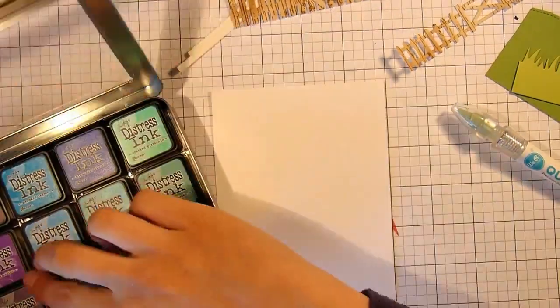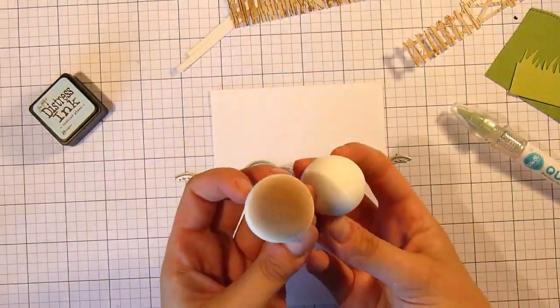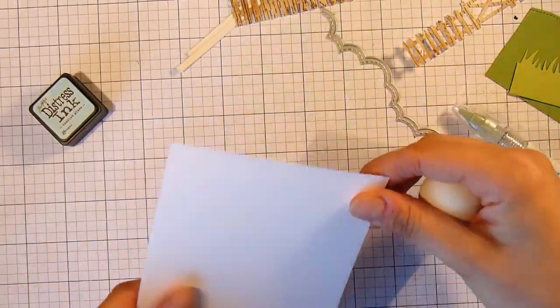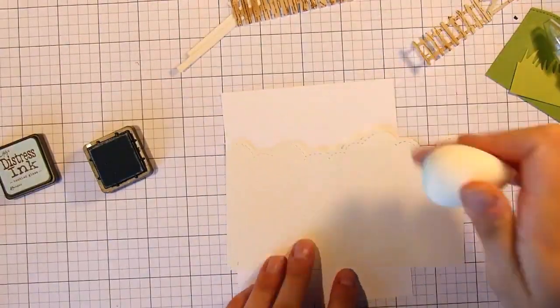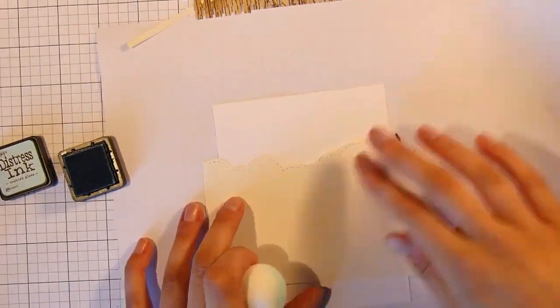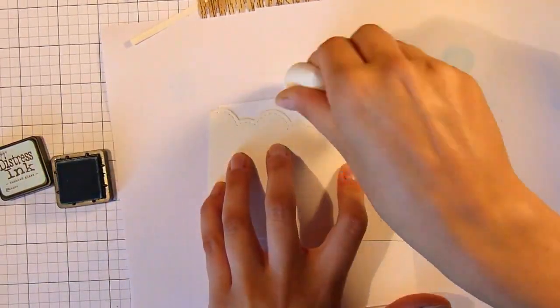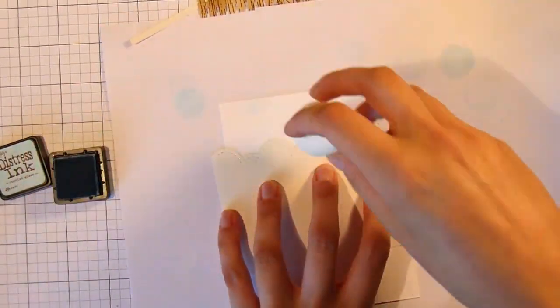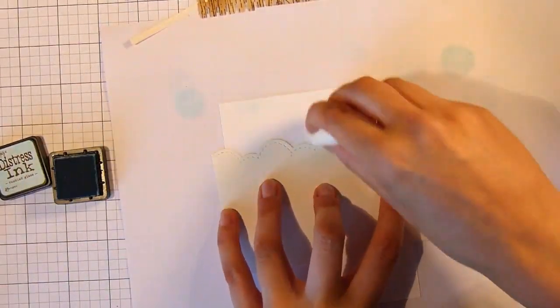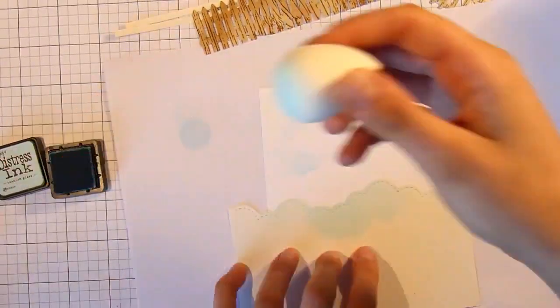Here I'm going to create some sky using some Tumbled Glass distress ink. And this cloud die is one of three that came in a set from AliExpress and I showed these in a recent haul video. I have used it to cut some cardstock and I'm just using that as a template or stencil and using the sponge dauber and the distress ink to create some clouds in the background. It's really hard to see on camera very well but in real life it looks quite good.